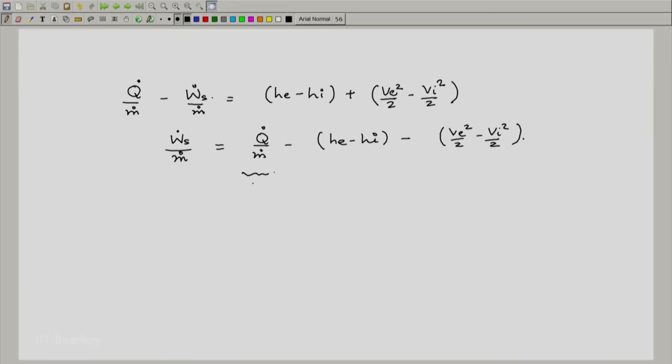You realize that this number is a negative number because you are losing heat. This is minus 50 kilojoules per kg. h_e minus h_i we realize is 2500 minus 3200, units are correct, kilojoules per kg, minus v_e^2/2 is 39.2 kilojoules per kg minus v_i^2/2 is 14.45 kilojoules per kg.